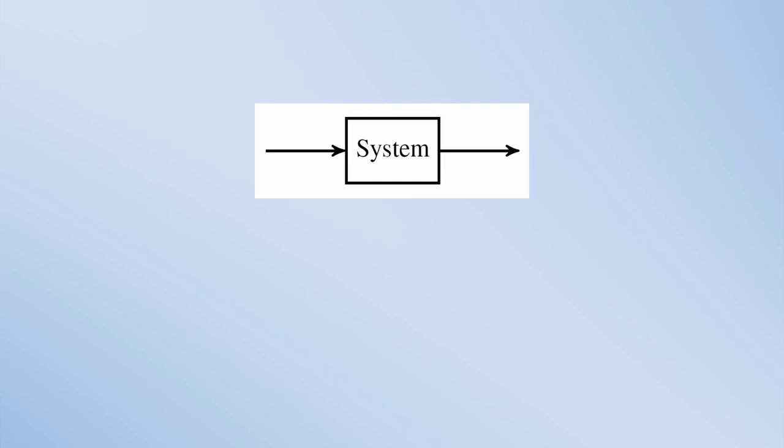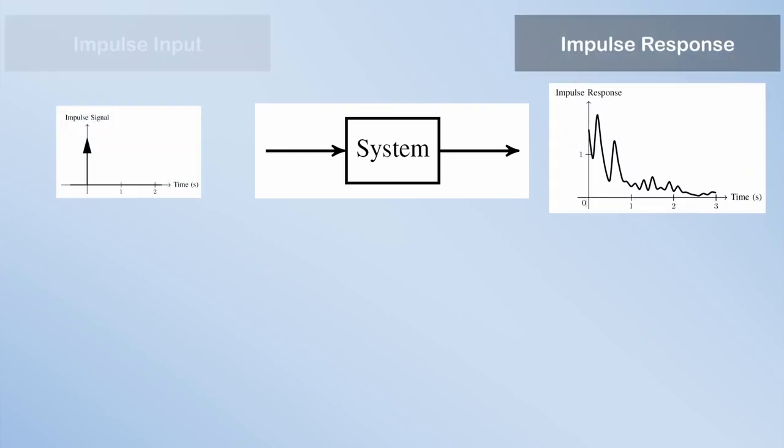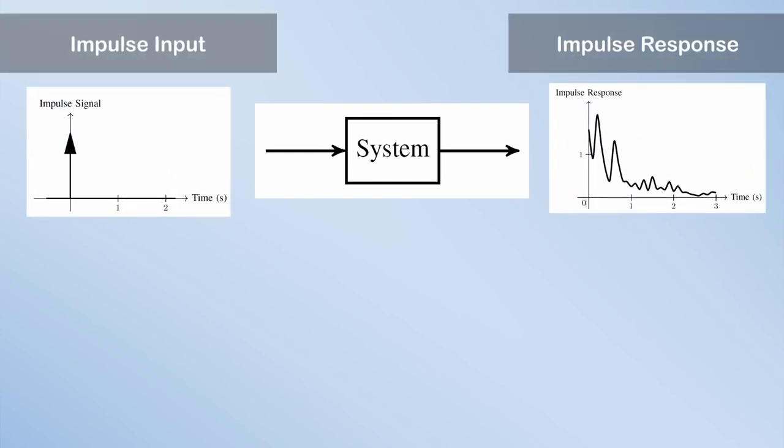A standard way to define a system is by its impulse response. The impulse response is the time-varying output when the input is an impulse, which is like a very quick spike. If you have an analog system that is linear time invariant, or as we say LTI, then you can find the output for any input by performing a mathematical operation called convolution between the input and the system impulse response.